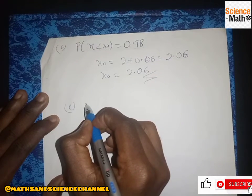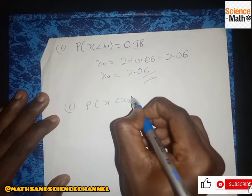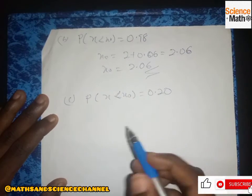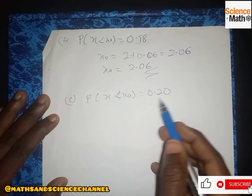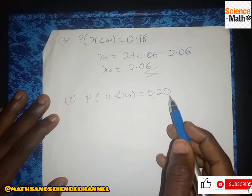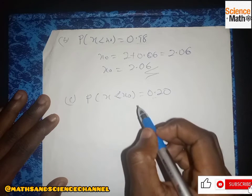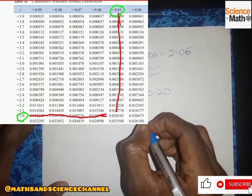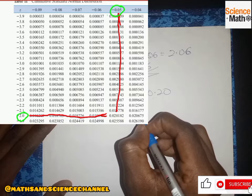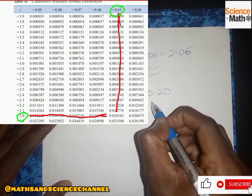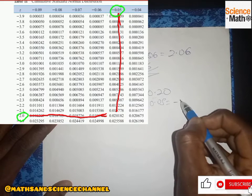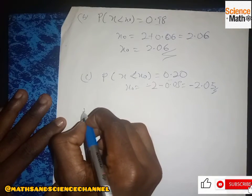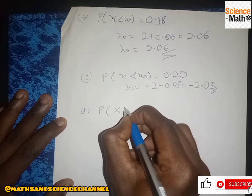For part (c), we find s-naught such that P(S < s-naught) = 0.20. Since it is less than, we go straight to the z-table and look up 0.20. Tracing the value, we get negative 2 on the right-hand side and negative 0.05 at the top, giving s-naught = negative 2.05.